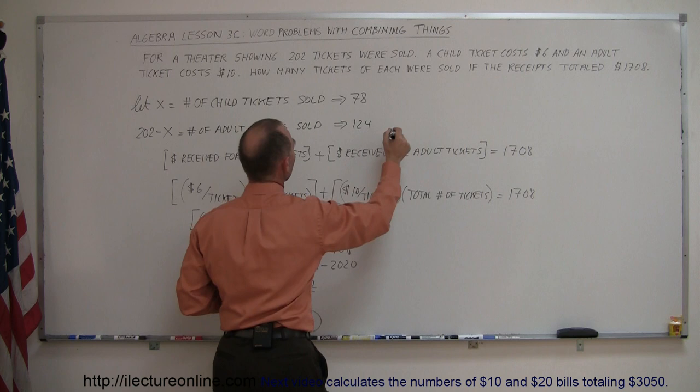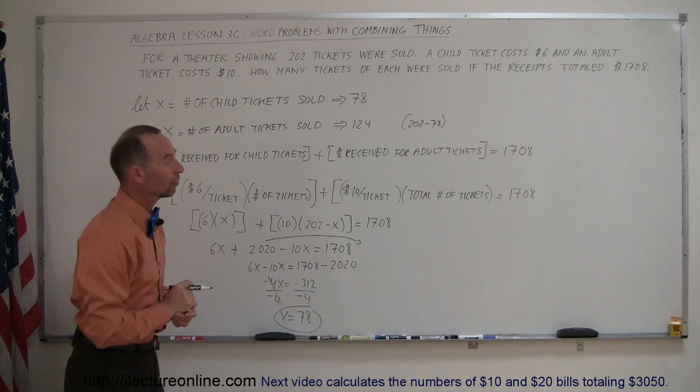That would be the same as saying 202 minus 78, and that is indeed 124. And so that's how we determine how many of these tickets were sold. Let me see if I can come up with another good example for this.